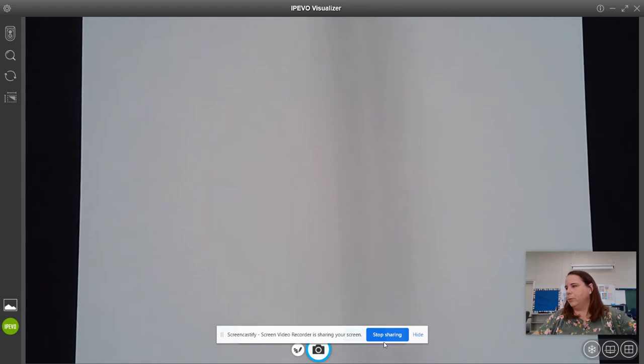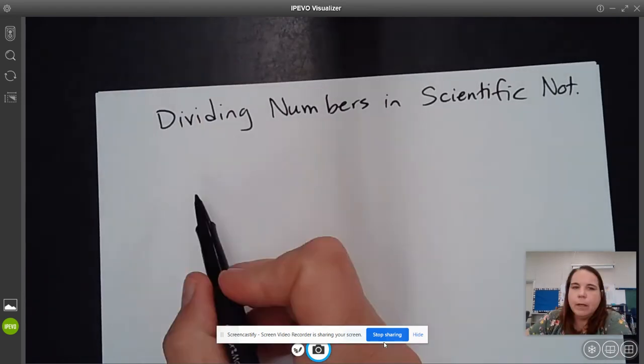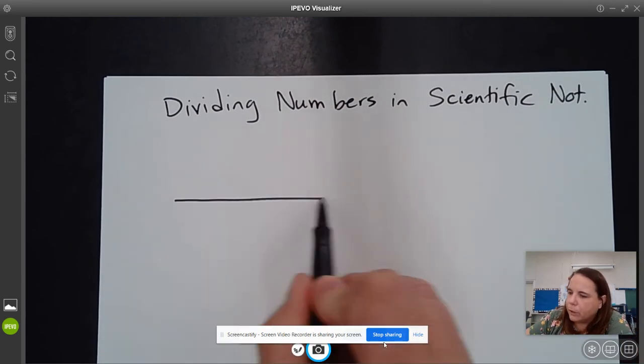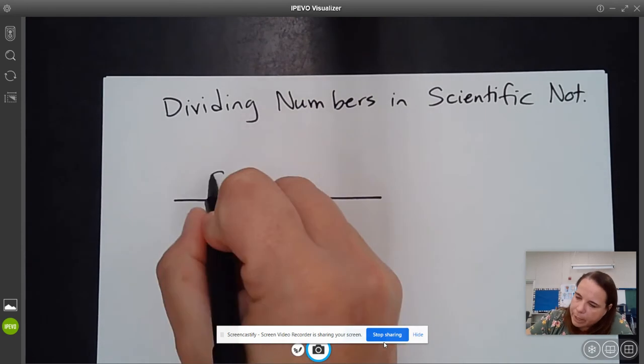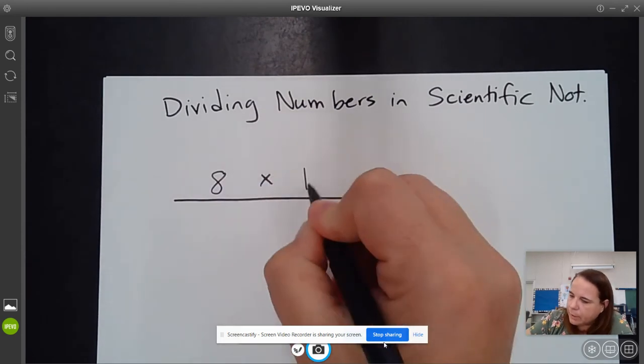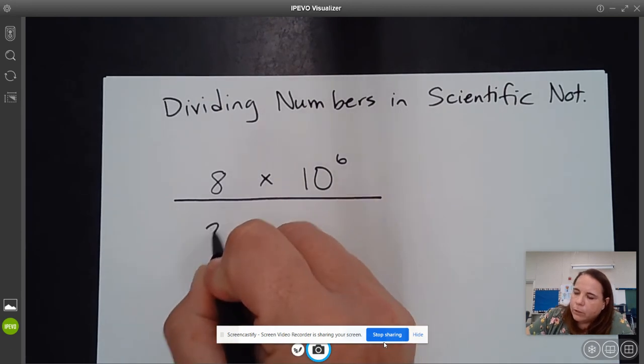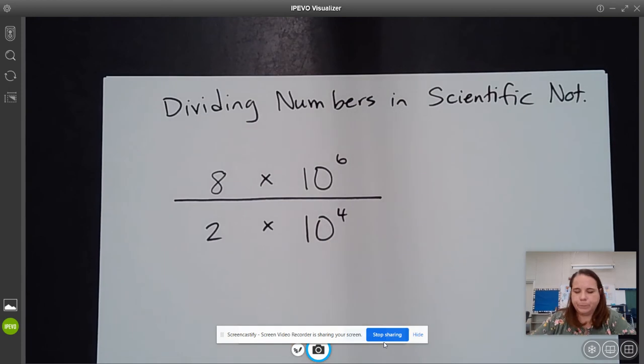So that's what we're going to do when we look at numbers in scientific notation. It's the same idea, but the numbers just look a little bit different and they're larger. So let's start off with a number like 8 times 10 to the sixth over 2 times 10 to the fourth. So this is how it's going to look when it's already in a problem form.